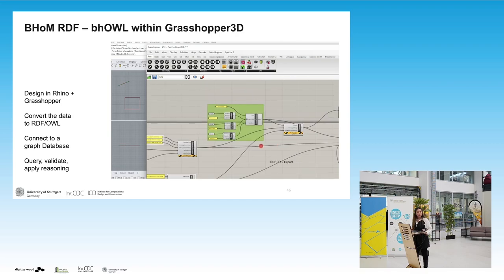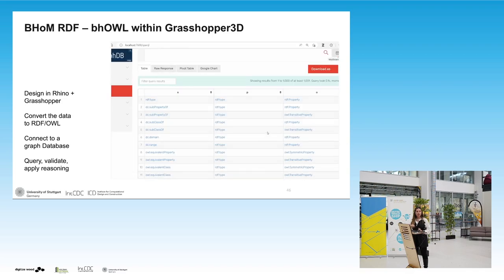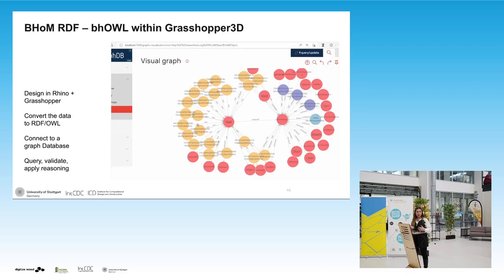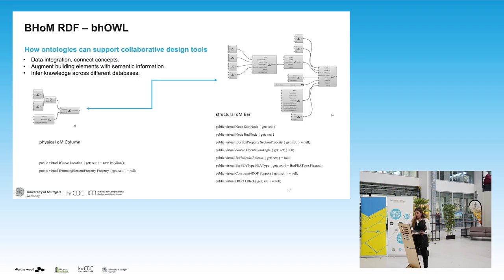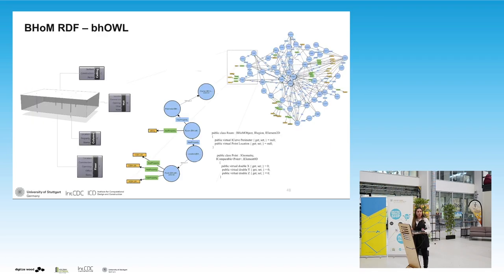Here is a visual representation of how one could design in Rhino or Grasshopper, then convert this data to RDF, directly connect to a graph database, query the information, and apply all the capabilities of semantic web technologies directly from the design platform. The advantages include: integrating data and different concepts, linking data with each other, augmenting objects with more semantic information, and inferring knowledge across different databases. An ontology containing classes, entities, and objects can represent a simple building with a ceiling, wall, columns, and floor, showing how the graph of the building corresponds.